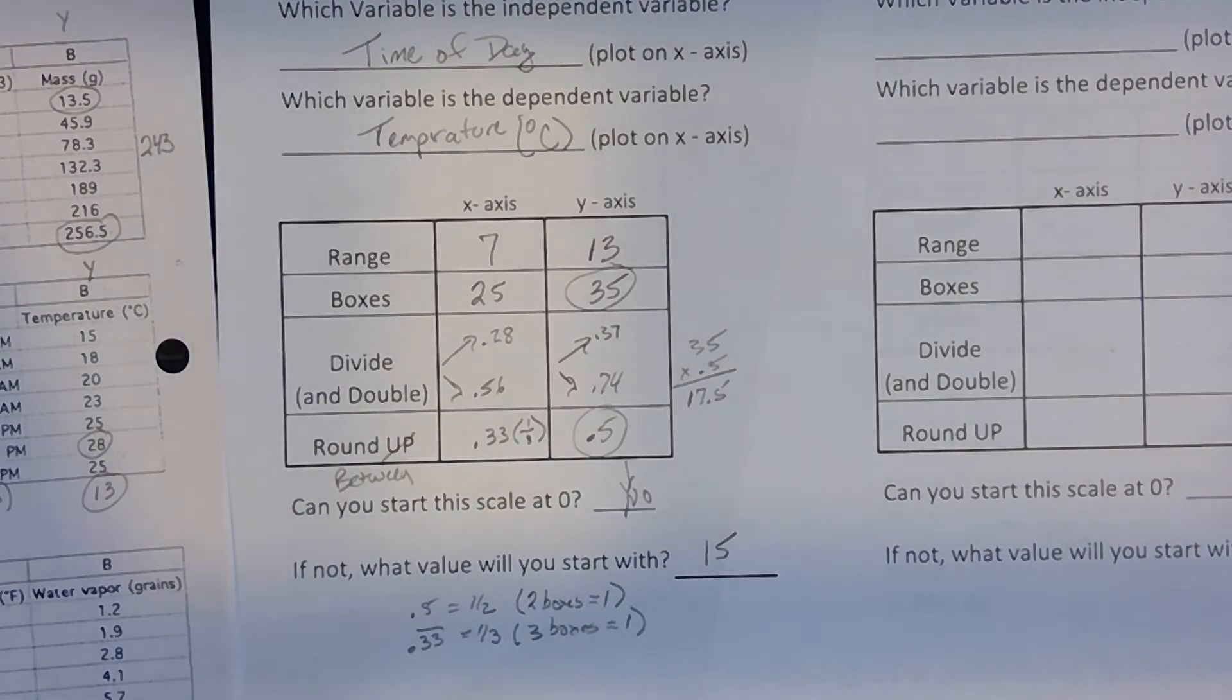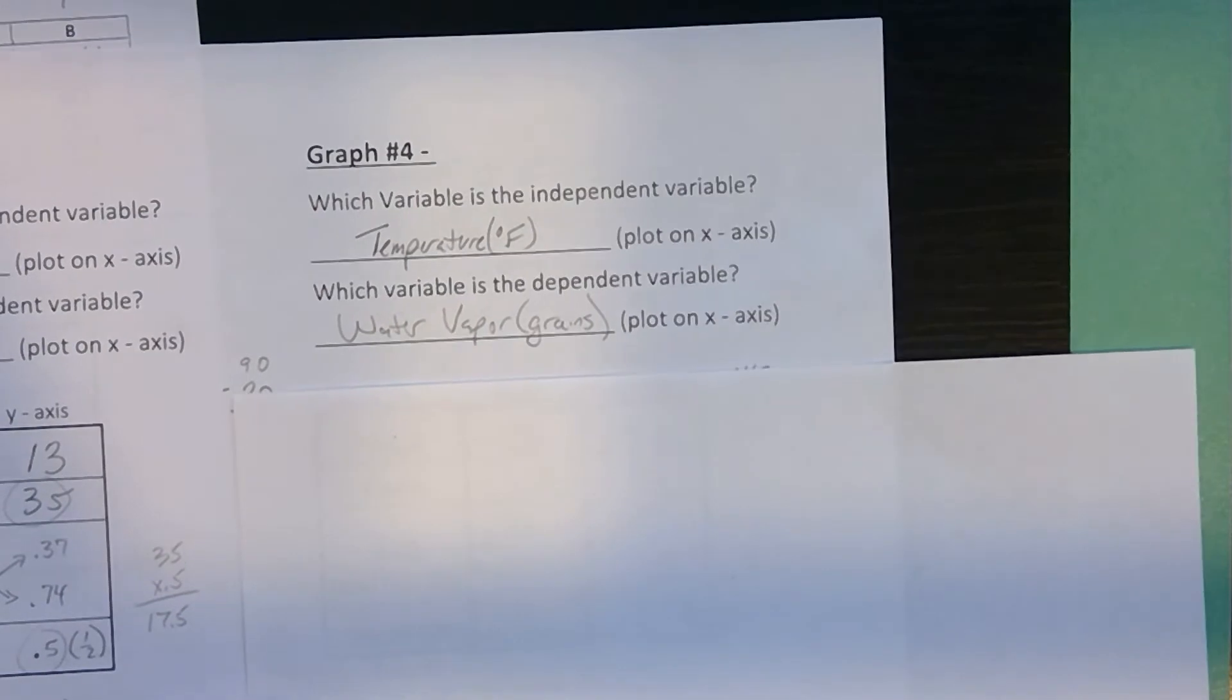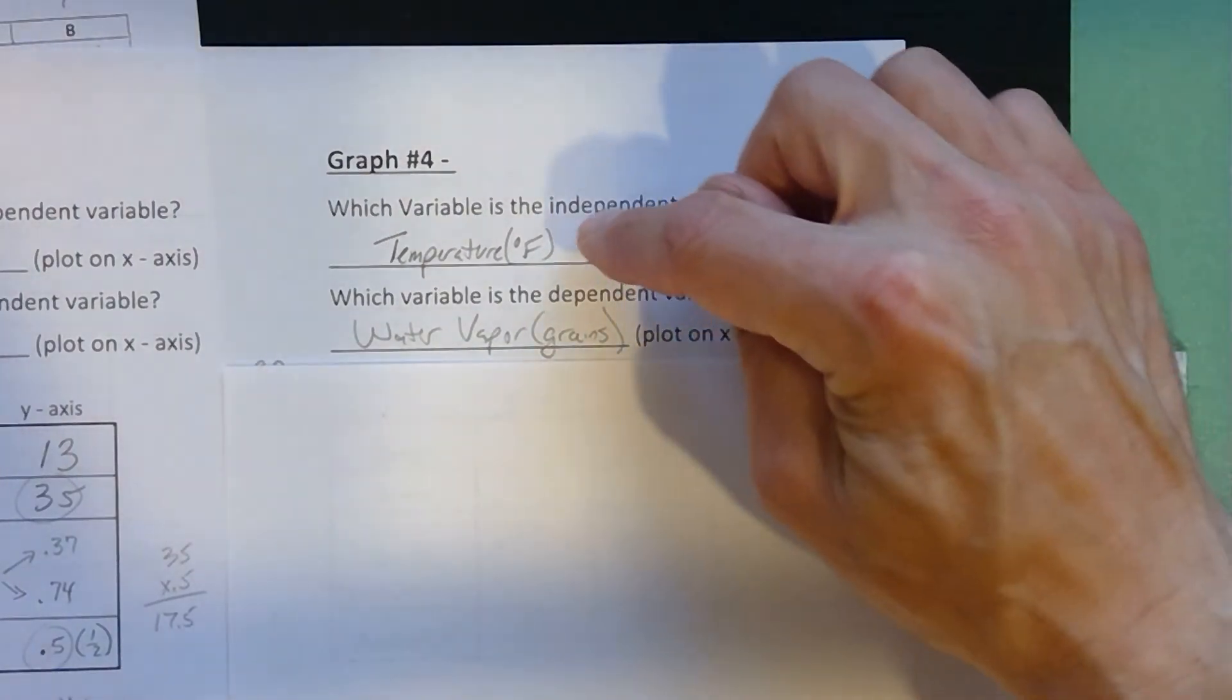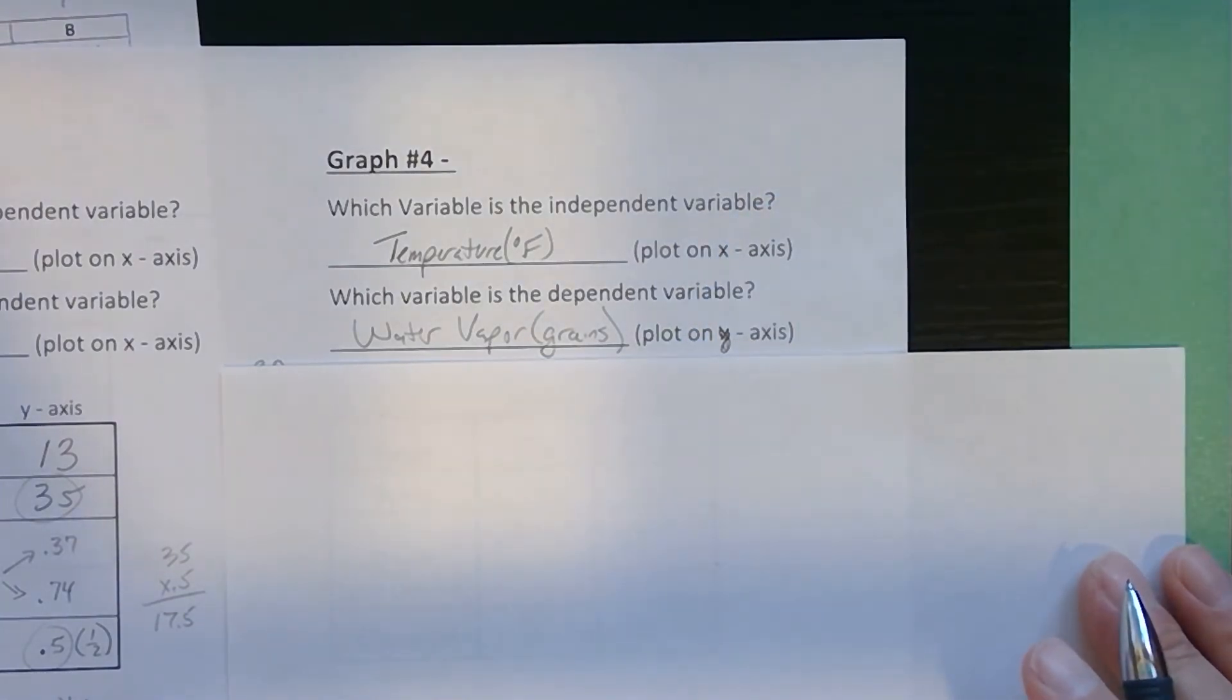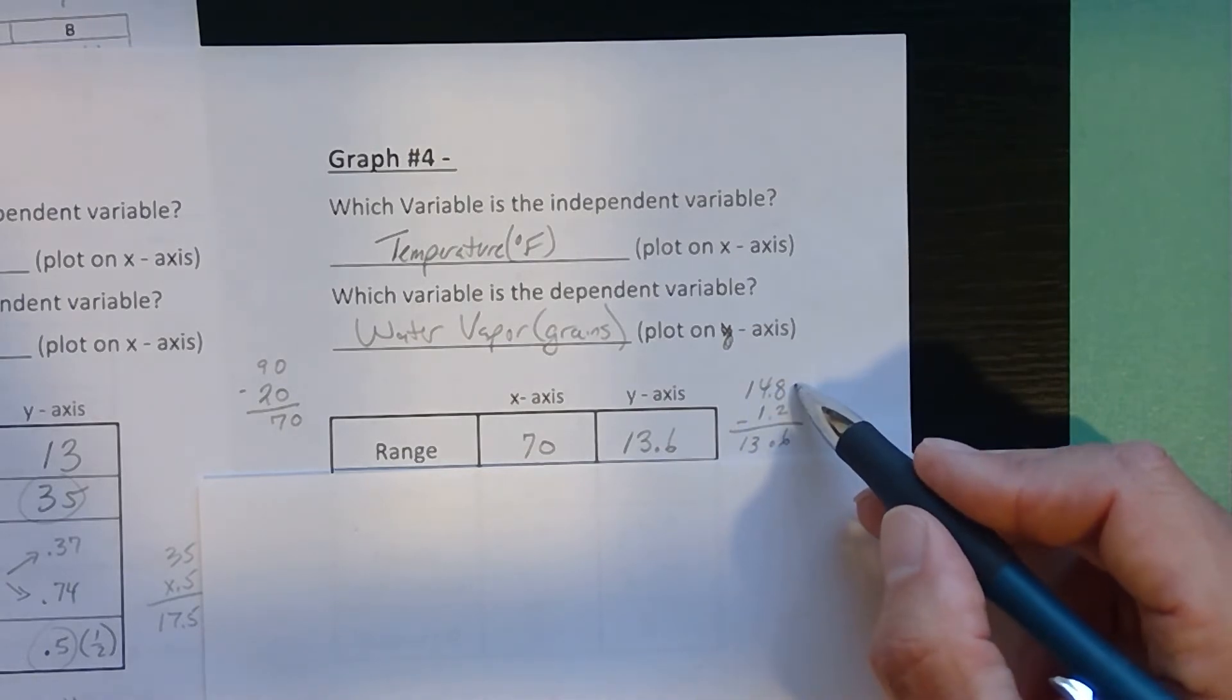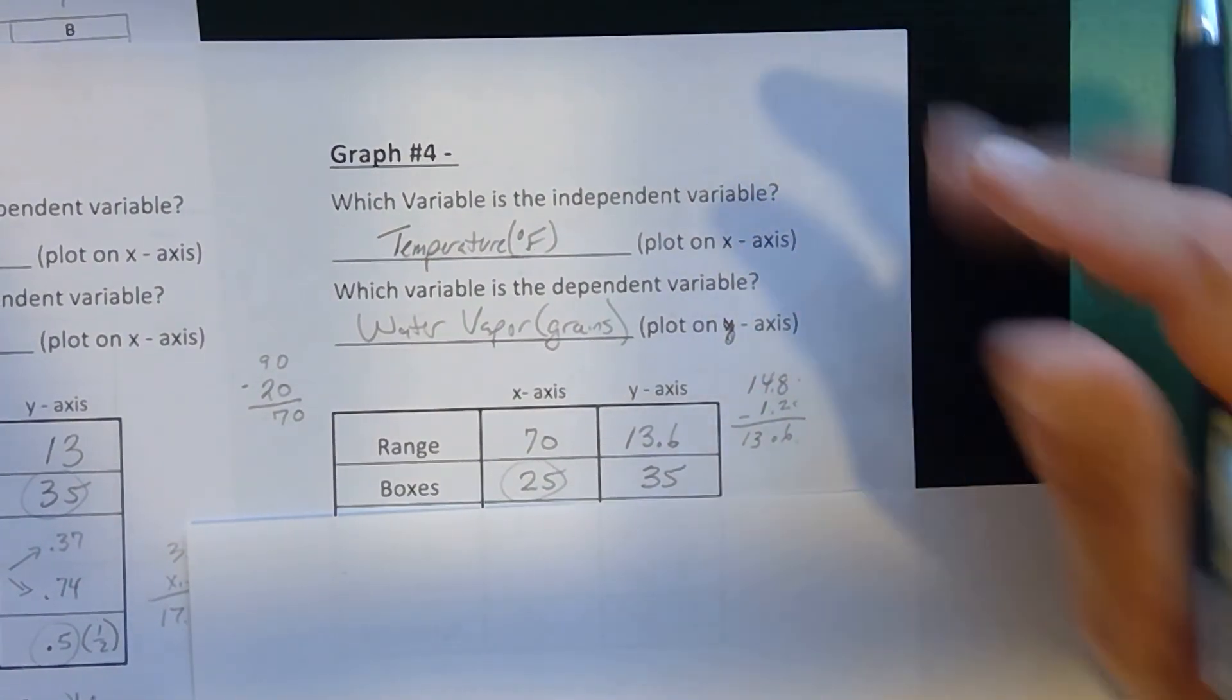Now, we're approaching 15 minutes, so I'm not going to do all the math with you on this one. I'm just going to sort of take you through the process again for graph number 4, the independent and the dependent variable. It's temperature and the amount of water vapor. The temperature determines how much moisture the air can hold. So, on hotter days, there's a larger capacity. Air can hold more water. So, temperature goes on the x-axis. Oh, these are typos. This should say y-axis on all of them. I've got to fix that. Now, looking at the ranges. 90 to 20 gives me a range of 17. 14.8 to 1.2 gives me a range of 36. My graph paper is the same. So, 25 by 35.